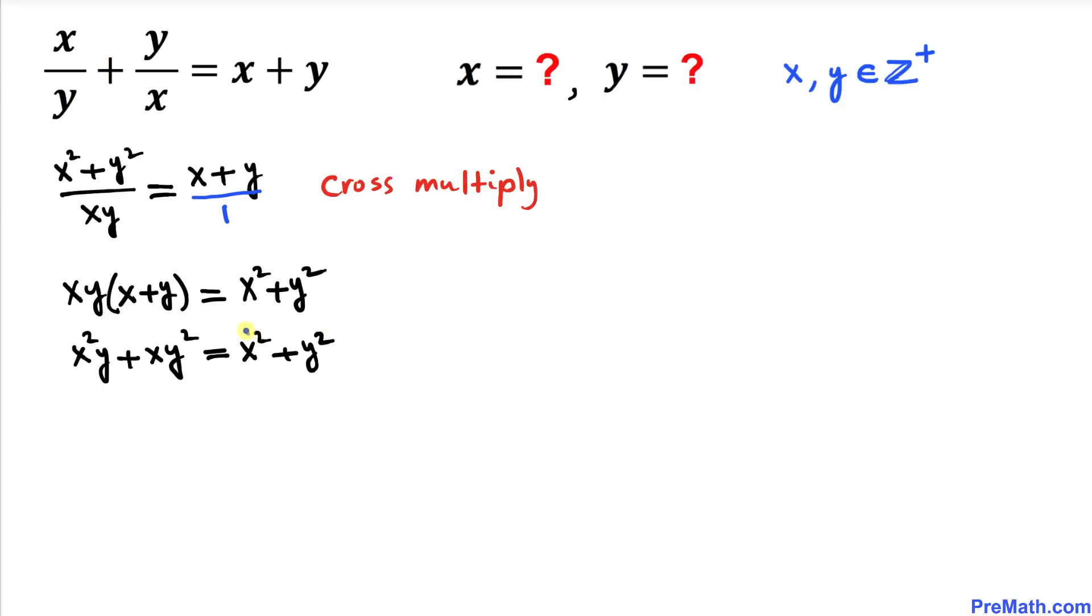Now let me move this x squared on this spot and this y squared on this one to the left-hand side. So that is going to look like: x squared y minus x squared plus xy squared minus y squared equals 0.